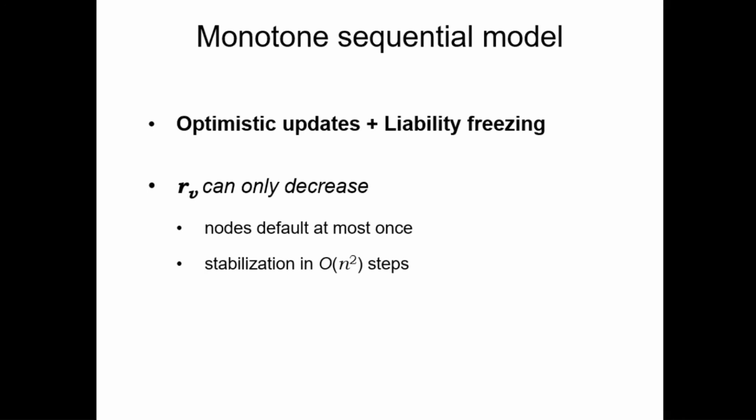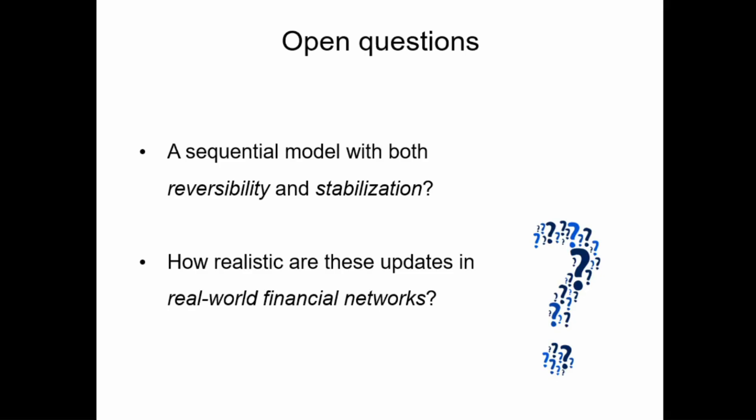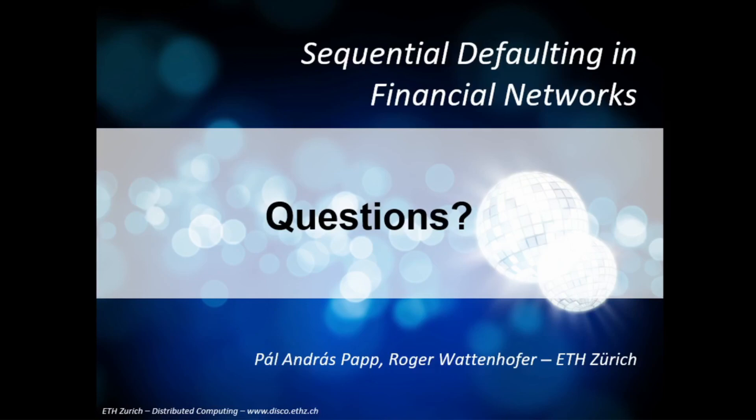On the other hand, the drawback of this monotonicity is that if recovery rates only decrease, then this is a sequential model where nodes can never return from the default, so we have lost another more or less realistic property. This already shows that one of the most natural open questions in this setting is whether we can come up with a sequential model that is even more realistic — in particular one that allows reversing defaults but also guarantees stabilization at the same time. There are also other aspects of the model where we could try to get closer to practical financial systems, for example by introducing some form of concurrency or a setting with incomplete information. With that, I thank you for your attention and I'm happy to answer any questions in the live session.